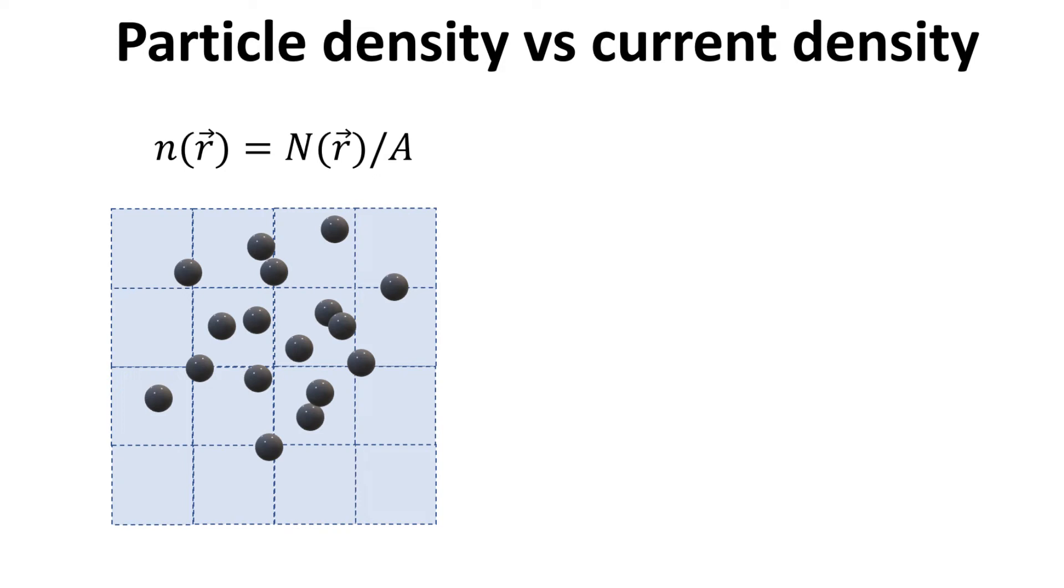Each of the unit is located at coordinate given by the two-dimensional vector R. Then the particle density, n, at location R, is just the number of particles in the unit area.